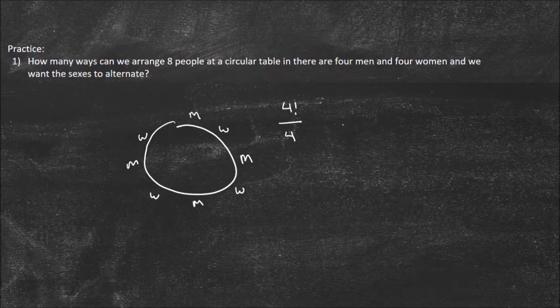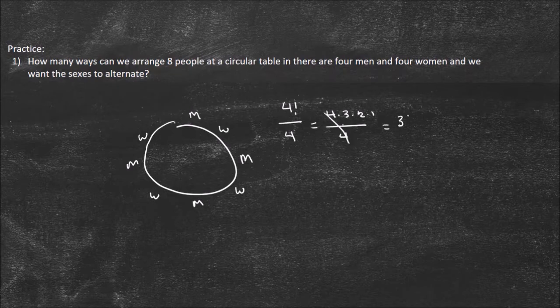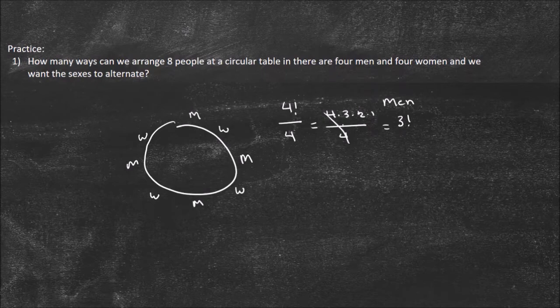Just so you know, the reason this cancels to three factorial is that four factorial is 4 × 3 × 2 × 1 divided by 4. Those cancel and we're left with three factorial, because that's 3 × 2 × 1. So this is the ways to organize the men. Now I need to multiply that by the ways I can organize the women. The women can be organized the exact same number of ways as the men, so three factorial times three factorial — but we're not quite done.